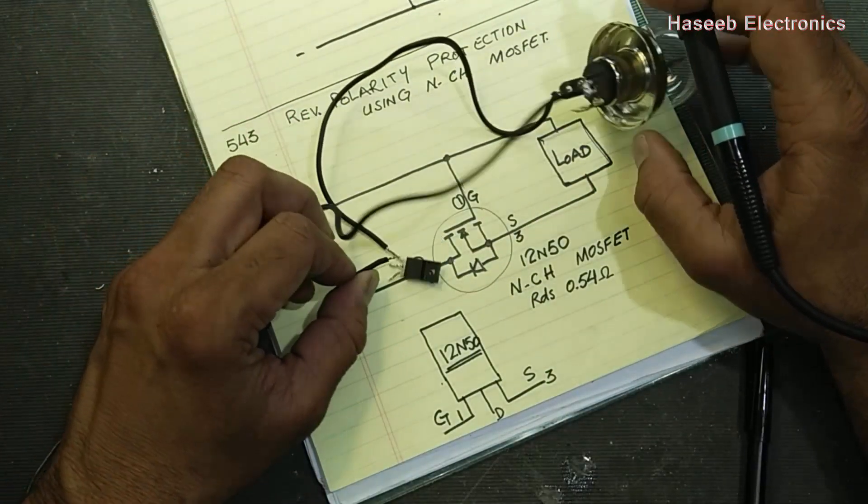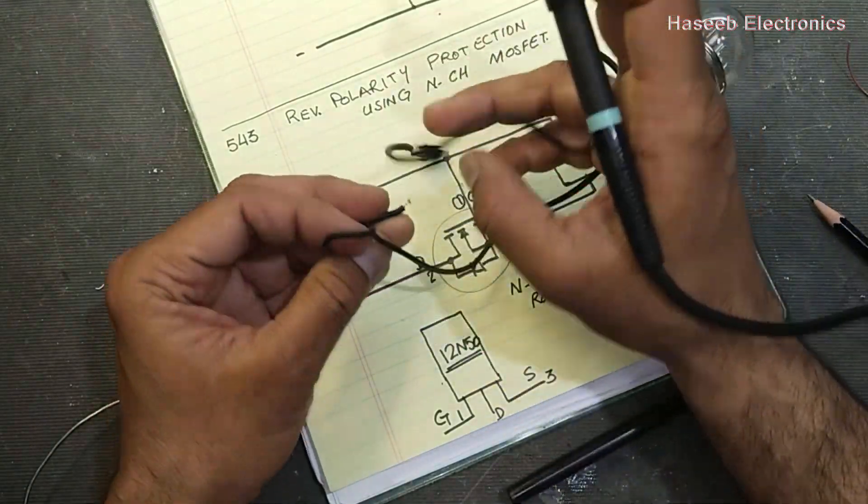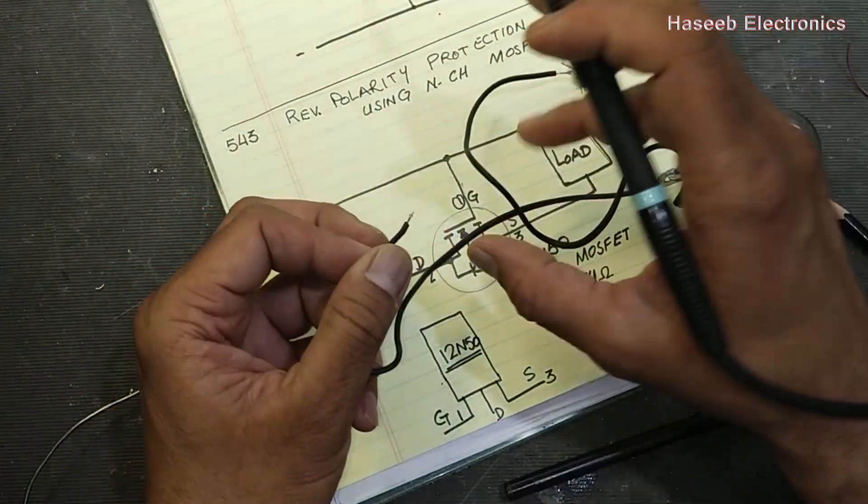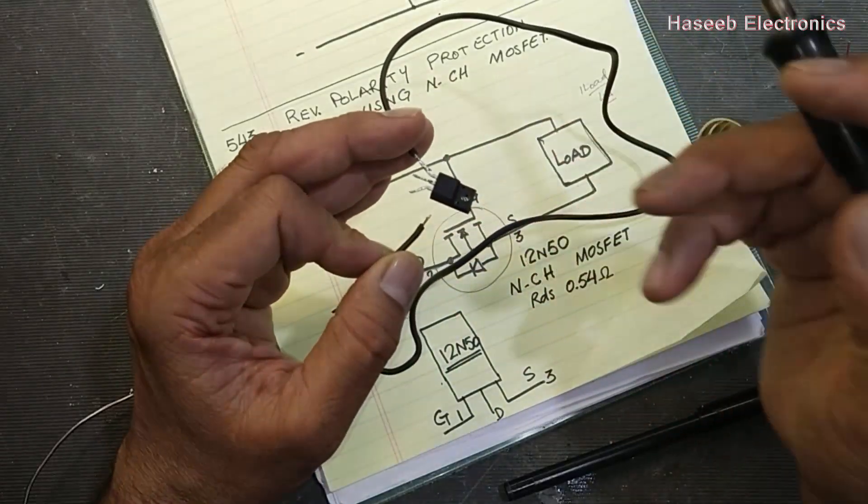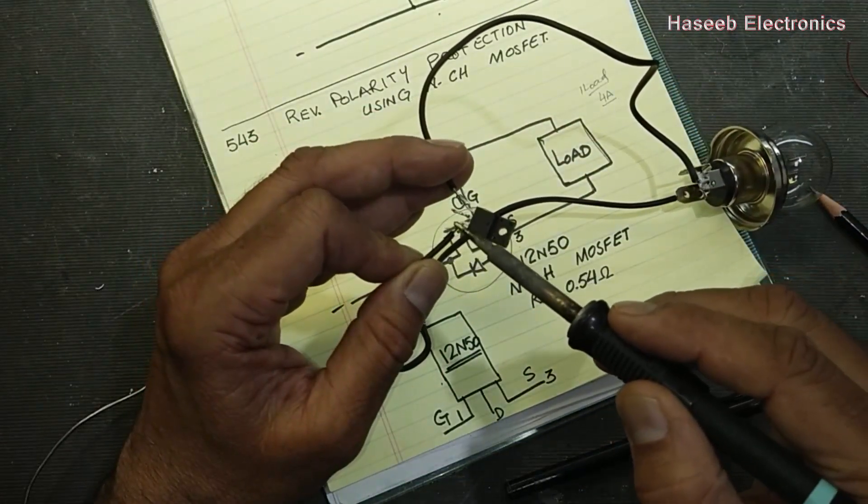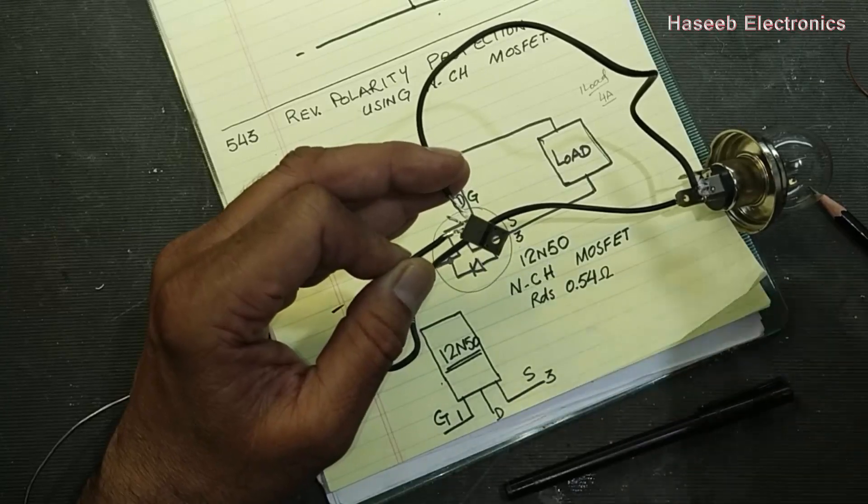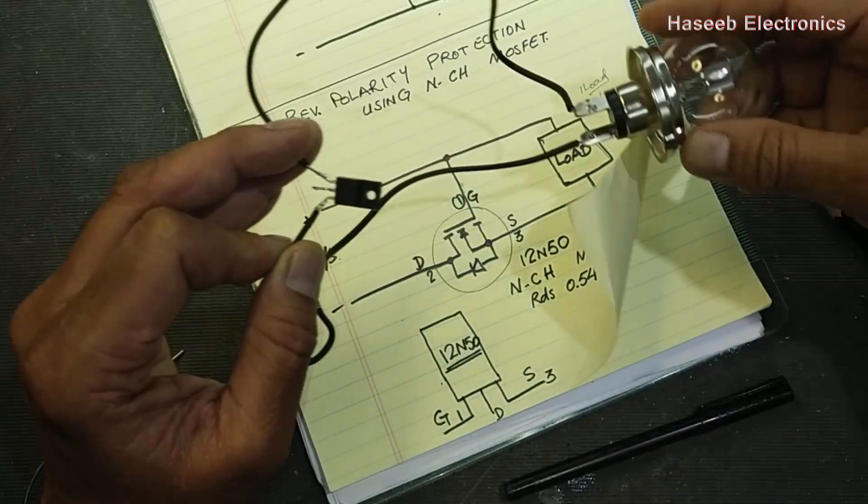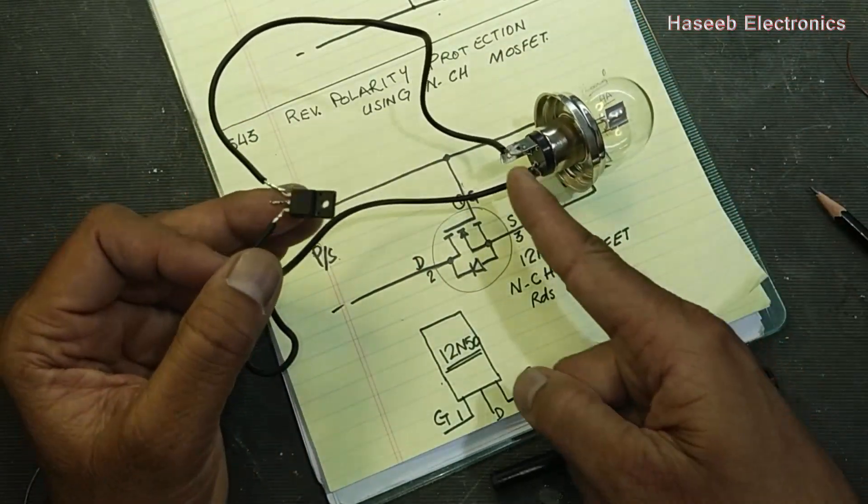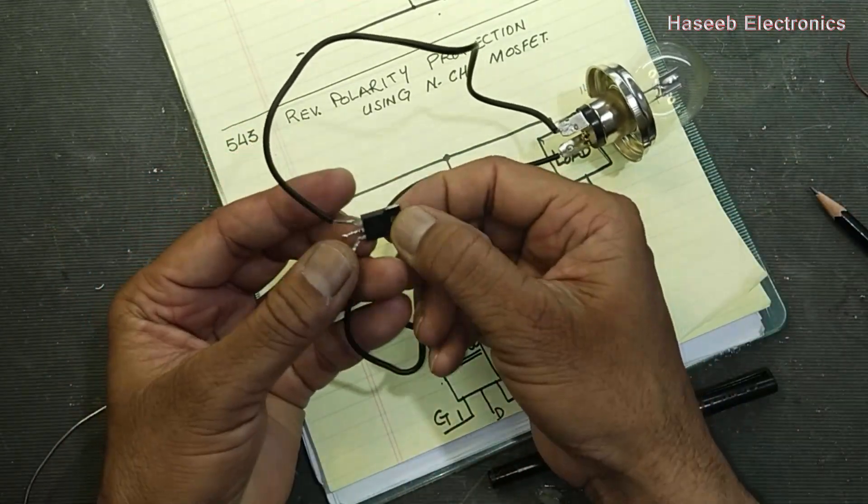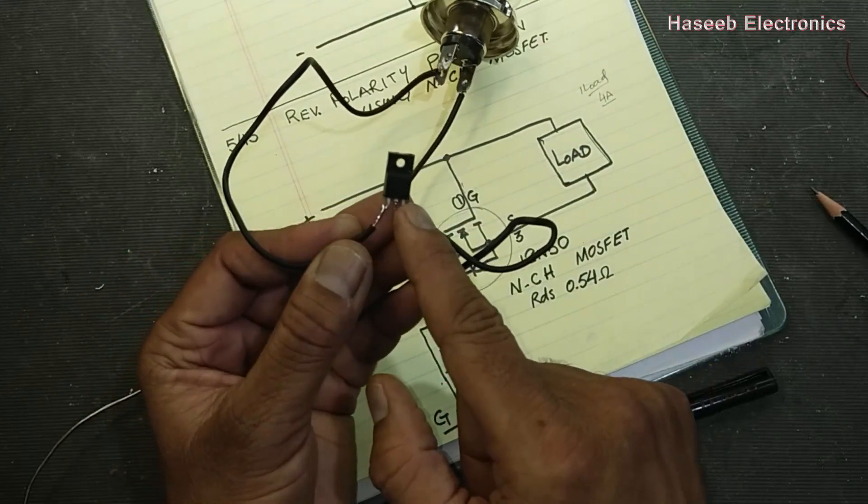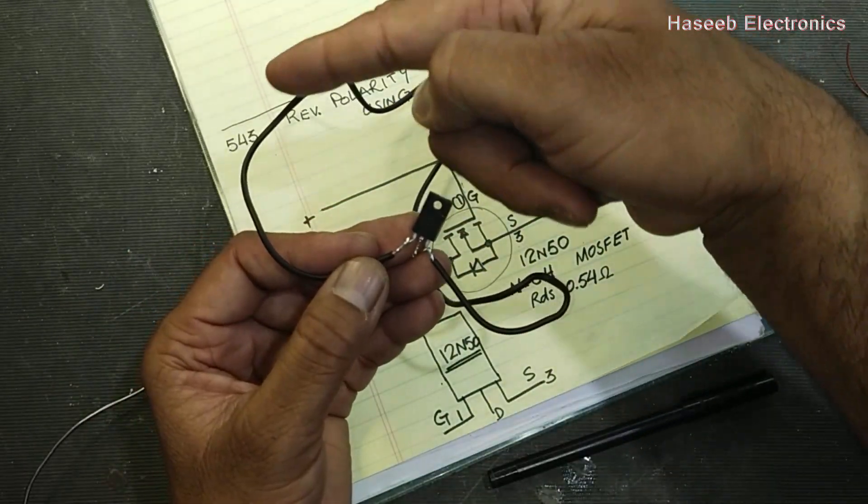And we will take output from pin number three, that is the source pin. We will connect source pin to the load. So this is load, these two wires are going to load.